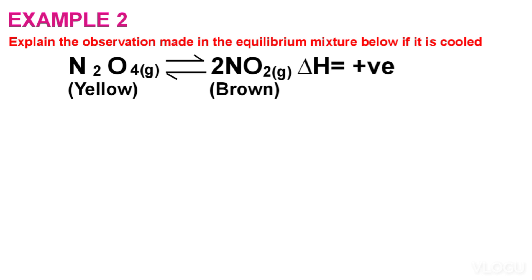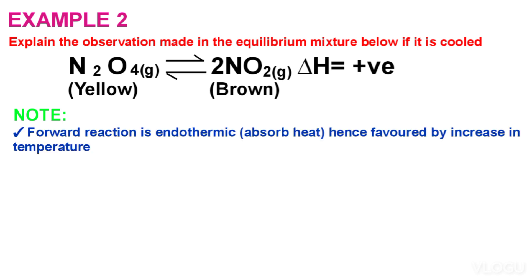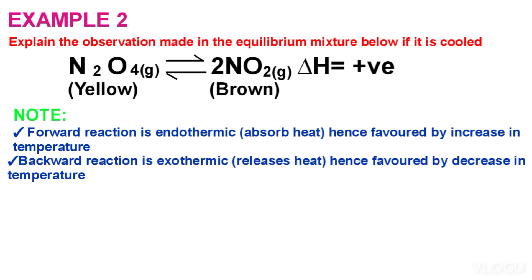Also note that a positive enthalpy change means the forward reaction is endothermic (absorbs heat), hence favoured by an increase in temperature, while the backward reaction is exothermic (releases heat), hence favoured by a decrease in temperature.